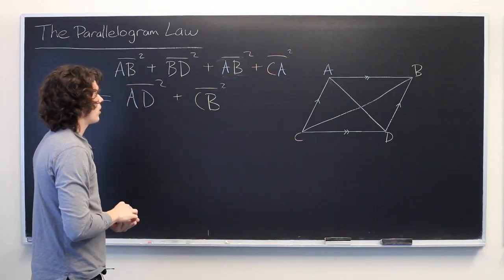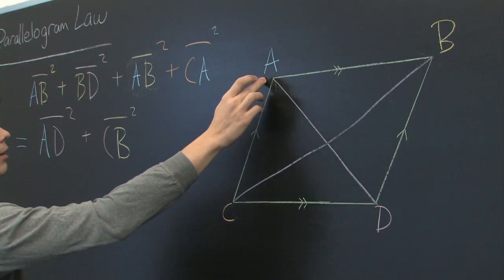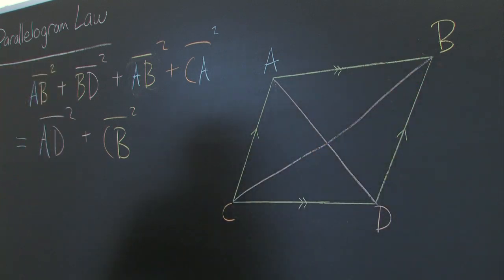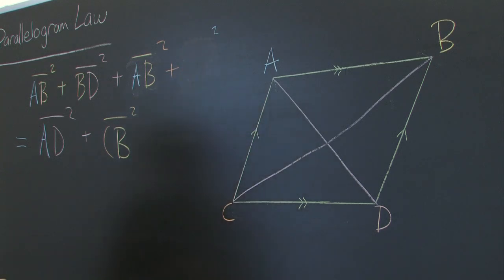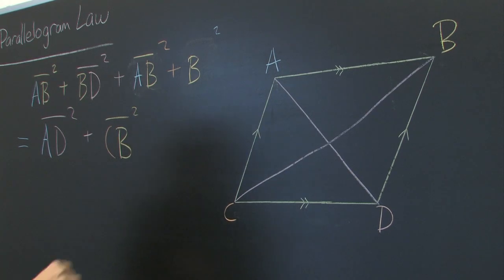And we also know that the length from C to A is going to be the same as the length from D to B. So, we can take out this term and replace it with BD squared.